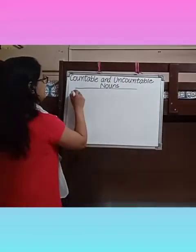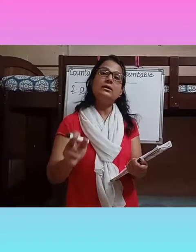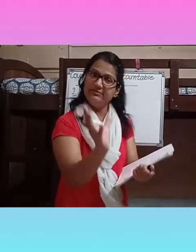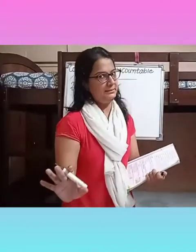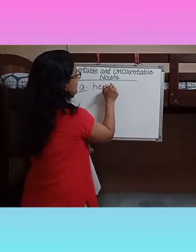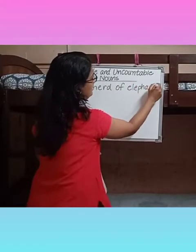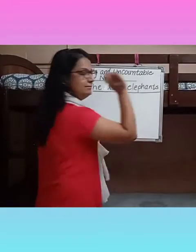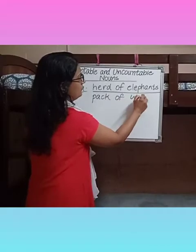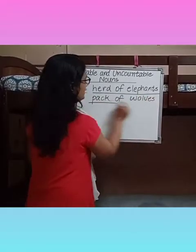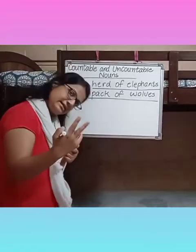For example, the sentence given is: 'The TV program showed a herd of elephants and a pack of wolves.' We have to underline 'herd of elephants' and also underline 'pack of wolves', because there are two collective nouns in this sentence.